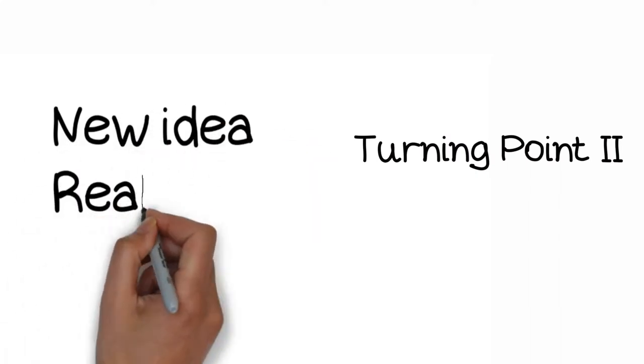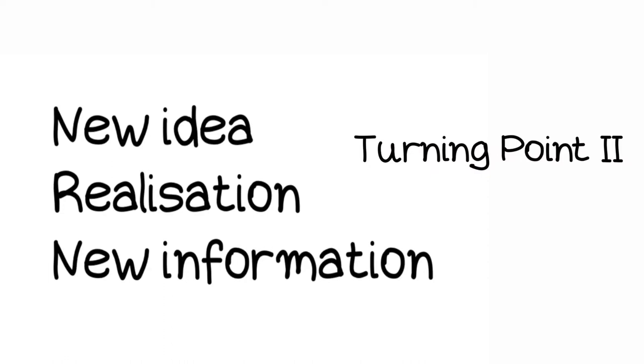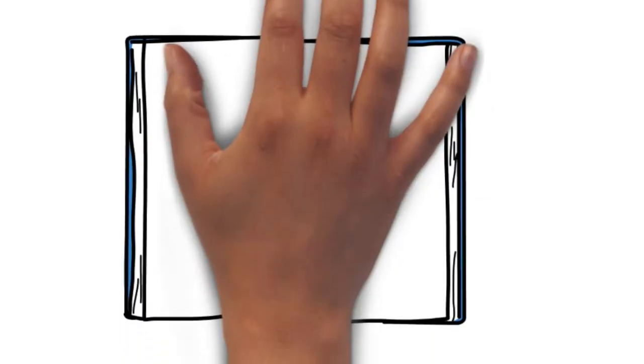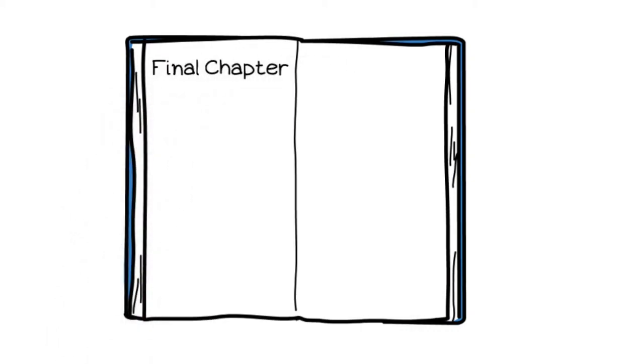In this second turning point, a new idea, a realization or a new information comes forward and urges the protagonists to move on. Usually this is where Act 2 ends and Act 3 begins, when a new chapter begins for the protagonists, which is going to be the final chapter, the one that will lead them towards the end of the story.